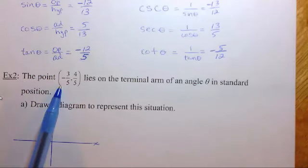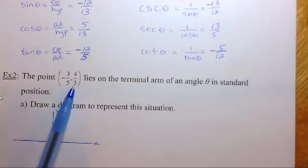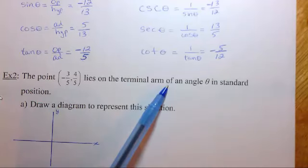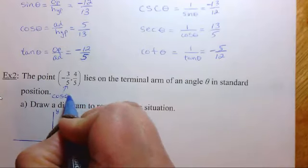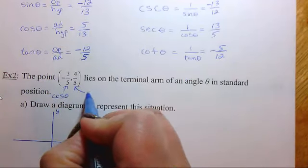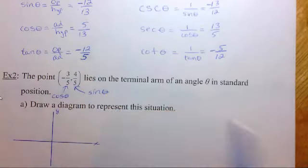Okay, so now here, in this one, we're going to look at the point. Negative 3 over 5 and 4 over 5 lies on the terminal arm of angle theta in standard position. Again here, this is our cosine theta. And this is going to be our sine theta.